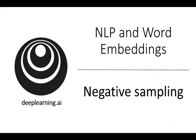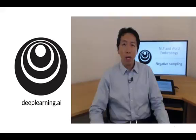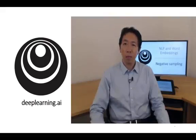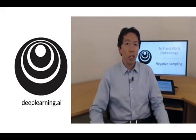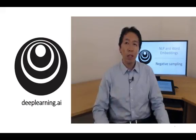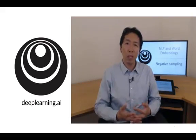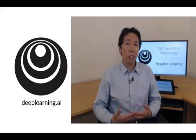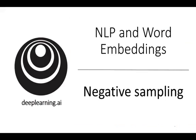In the last video, you saw how the SkipGram model allows you to construct a supervised learning task where you map from context to target words and how that allows you to learn a useful word embedding. But the downside of that was the softmax objective was slow to compute. In this video, you'll see a modified learning problem called negative sampling that allows you to do something similar to the SkipGram model you saw just now, but with a much more efficient learning algorithm.